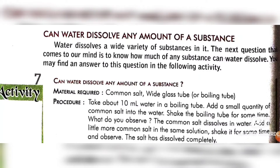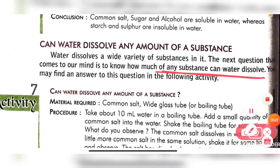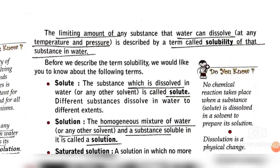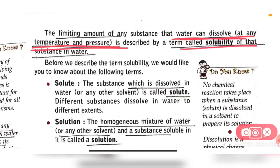The next question that comes to our mind is: how much of any substance can dissolve in water? There is obviously a particular maximum amount that water can dissolve. There is a limit, and that limiting amount of substance that water can dissolve at any particular temperature and pressure is called the solubility of that substance in water.